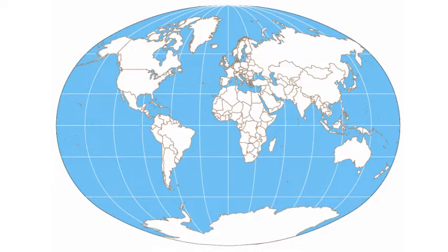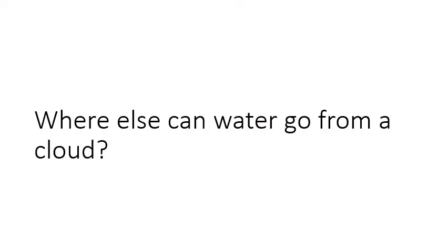Water going from oceans to clouds and right back down into the ocean is by far the most frequent exchange of water on our planet. It makes sense because 75% of our planet is covered in water — that's where the water for evaporation comes from to make clouds. And when it rains, there's a much better chance that water from a cloud falls on the ocean than on land.